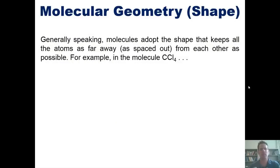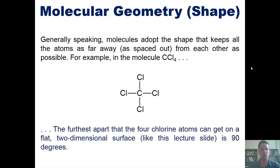So if shapes of molecules matter, we need to learn how to predict what those shapes are going to be. Generally speaking, molecules adopt the shape that keeps all the atoms around a central atom as far apart or as spaced out from each other as possible. For example, in the molecule carbon tetrachloride, whose Lewis structure without all the lone pairs on the chlorines is shown here, the furthest apart that the four chlorine atoms can get on a flat two-dimensional surface like this screen is 90 degrees.